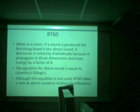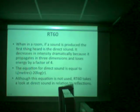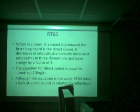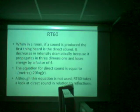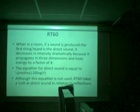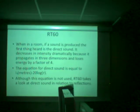RT60. When in a room, if a sound is produced, the first thing heard is the direct sound. It decreases in intensity dramatically because it propagates in three dimensions and moves energy by a factor of four. The equation for direct sound is equal to L1 meters minus 20 log R. Although this equation is not used, RT60 takes a look at direct sound in relation to reflections.